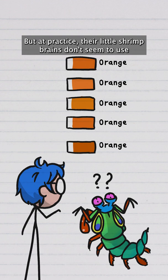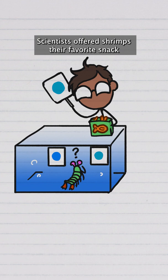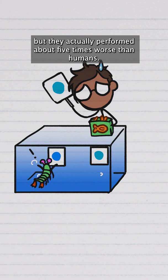Scientists offered shrimps their favorite snack if they could parse the difference between a range of colors. But they actually performed about five times worse than humans.